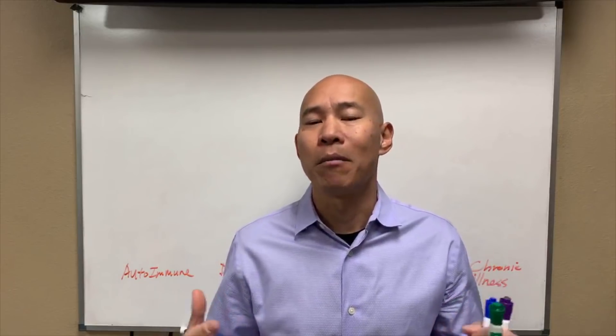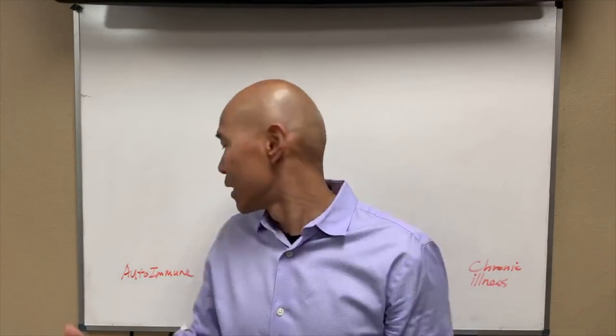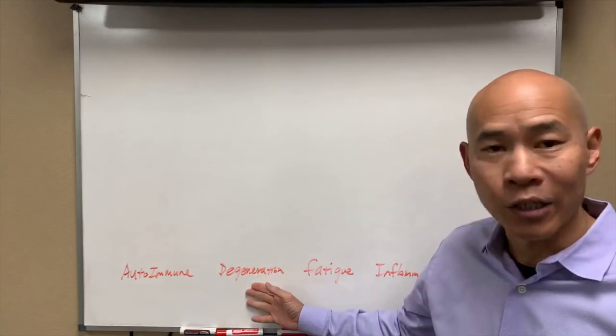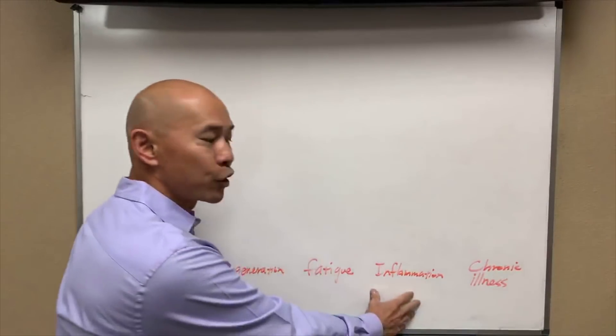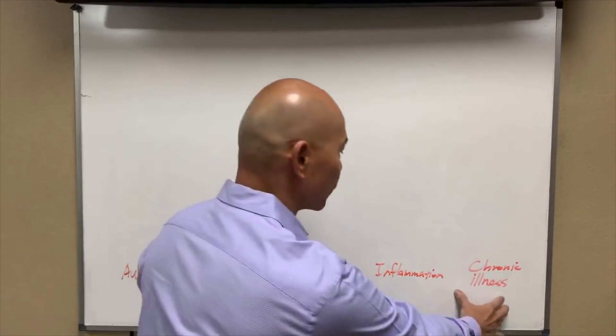Today we're going to be talking about the different models — different ways that toxins can build up in the system — and how that triggers inflammation and immune system dysfunction, and leads to autoimmune disease, degeneration, fatigue, inflammation, and chronic illness.